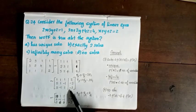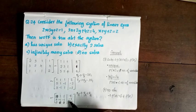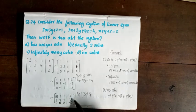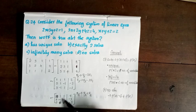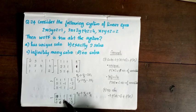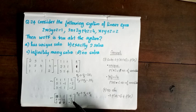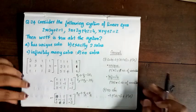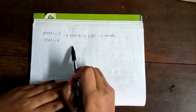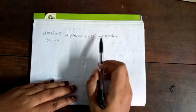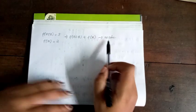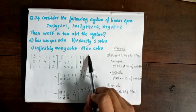After row reduction, the rank of the augmented matrix [A|B] is 3, while the rank of the coefficient matrix A is 2. Since rank[A|B] ≠ rank[A], the system does not have a solution. Therefore, option D is correct.